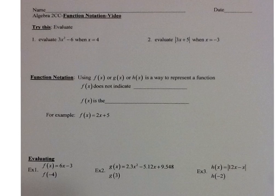So let's see what you got. It says to evaluate 3x squared minus 6 when x is equal to 4. Wherever you see an x, you're going to plug in 4 and then evaluate. So we have 3 times 4 squared minus 6. You could just plug that into your calculator — 3 times 4 squared minus 6 is equal to 42.